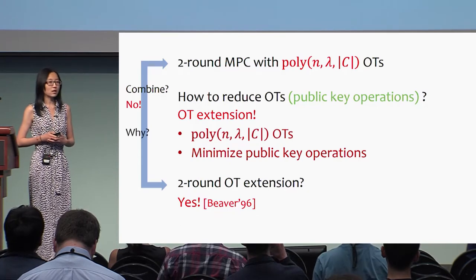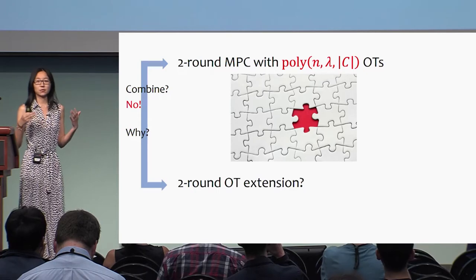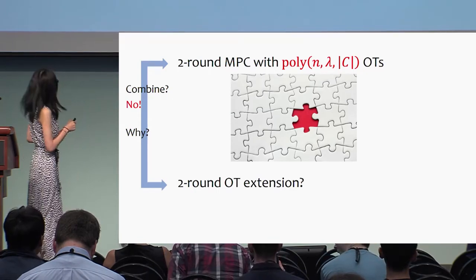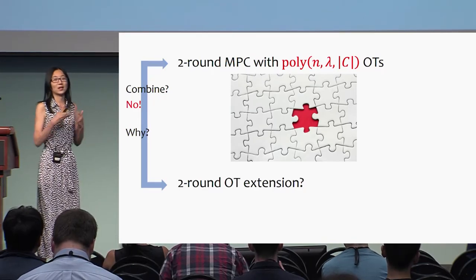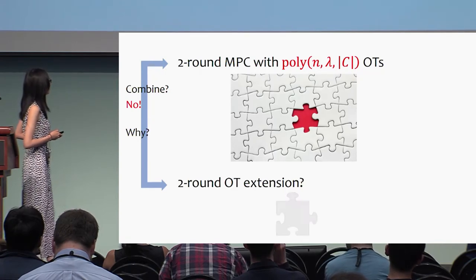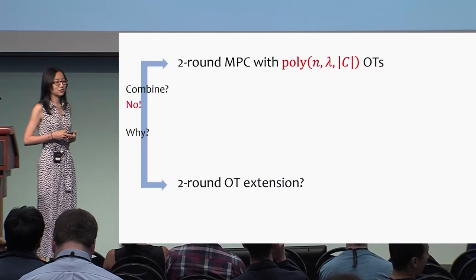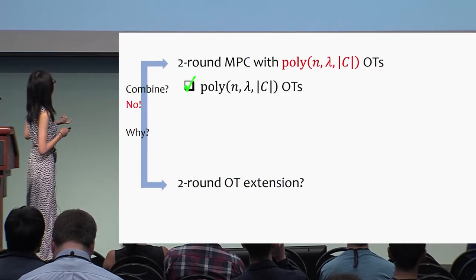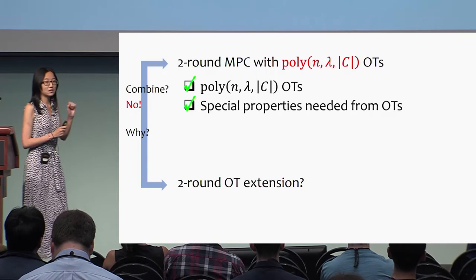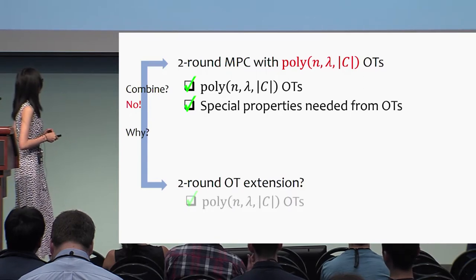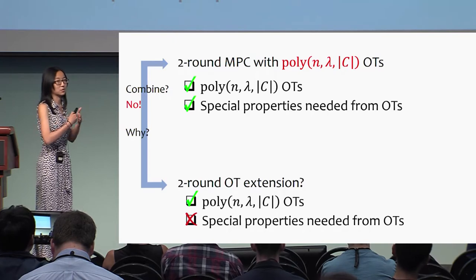Why? At a very high level, the reason is the following. You look at this puzzle — this two-round MPC where we want to minimize public key operations — and there is a missing piece. You feel like two-round OT extension is exactly the missing piece. But if you look at two-round OT extension, it actually looks different, so it doesn't match. In more detail, two-round MPC needs to do many OTs with two special properties, but two-round OT extension doesn't satisfy these special properties. There is a mismatch.